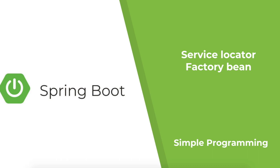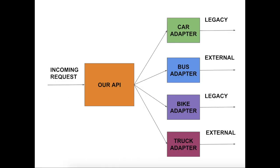Let us first see an example architecture to understand this better. An incoming request comes to our API, and the API interacts with multiple legacy and external systems through adapters. Our API will have a car adapter, a bus adapter, a bike adapter, and a truck adapter.